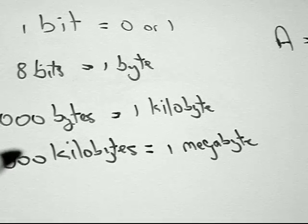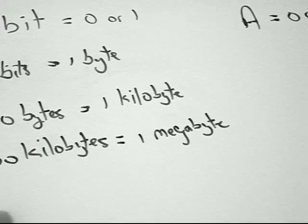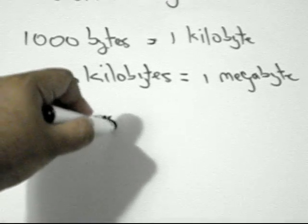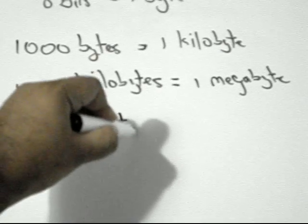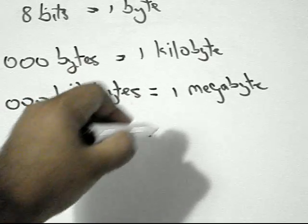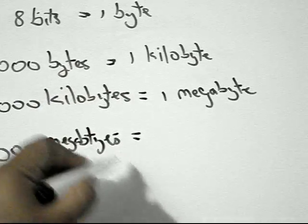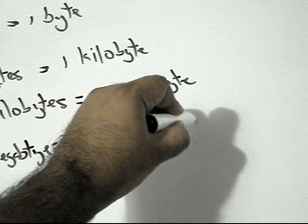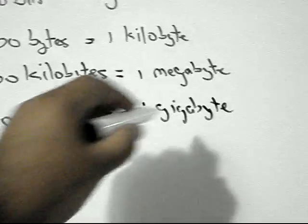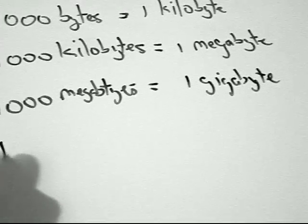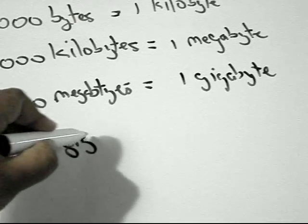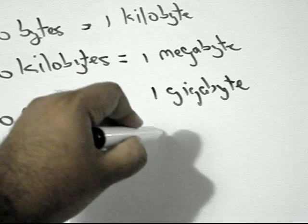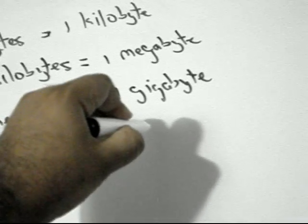So one thousand kilobytes equals one megabyte. In the same regard, one thousand megabytes is one gigabyte, and in so doing the same way, one thousand gigabytes is one terabyte.